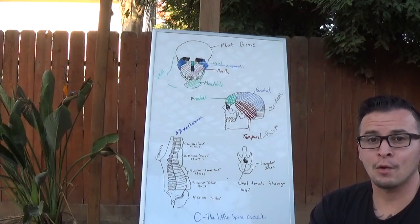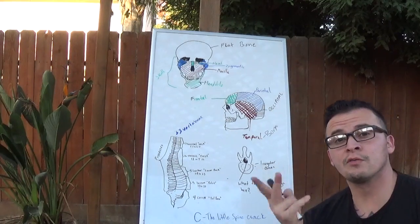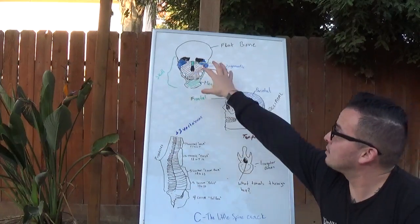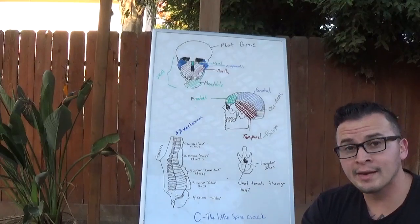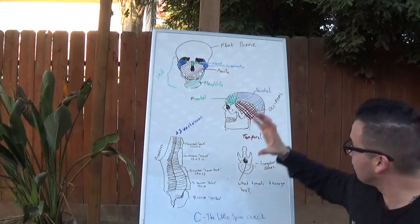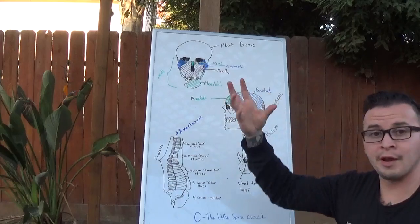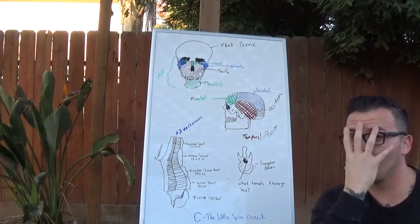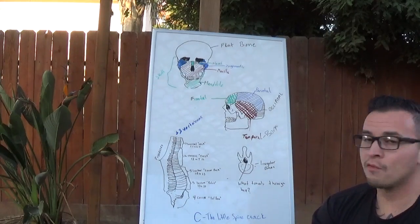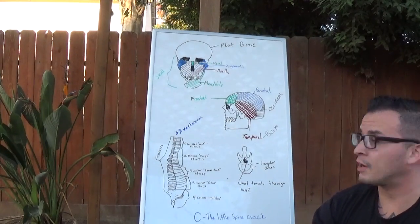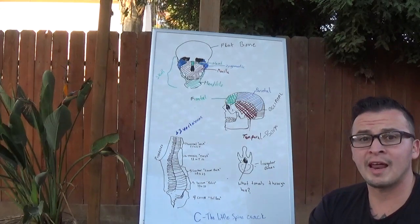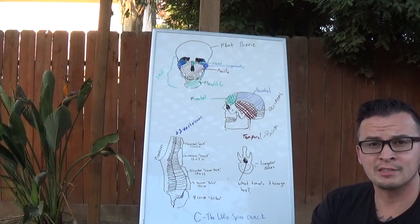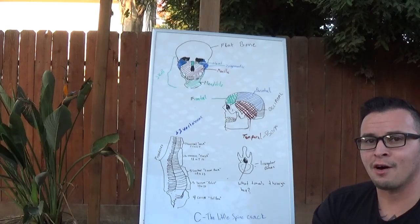Now let's go into the head. There are two different sections: you have the skull, which is the front face part, and then you have the cranium, which is the big top part where your brain lays. Two different things — skull and cranium. Let's go over the skull first, some simple anatomy landmarks that will help you in the field explaining things to doctors, nurses, and colleagues.